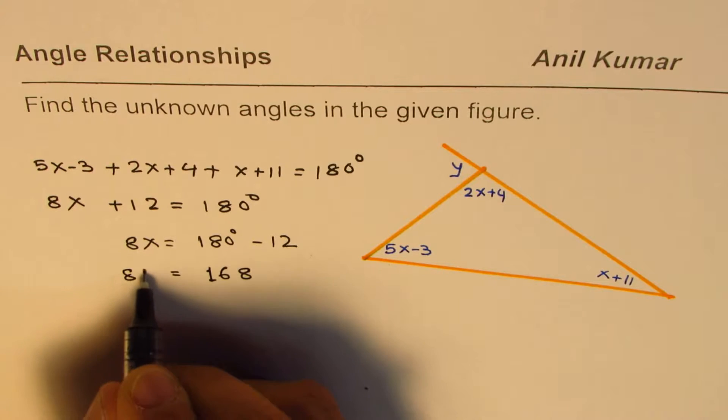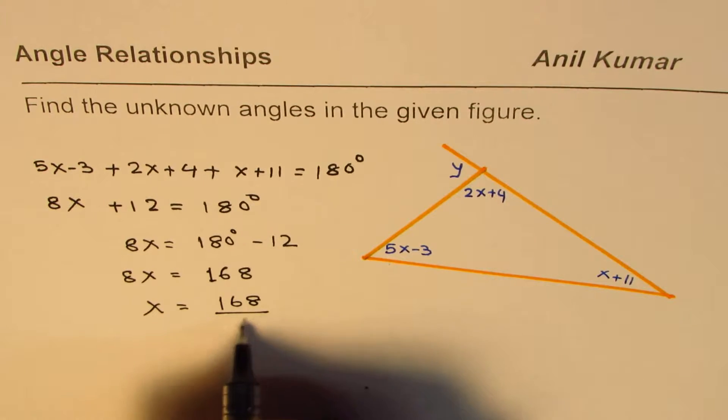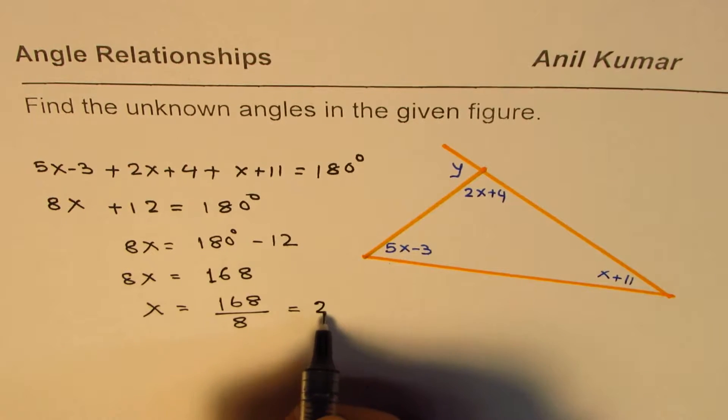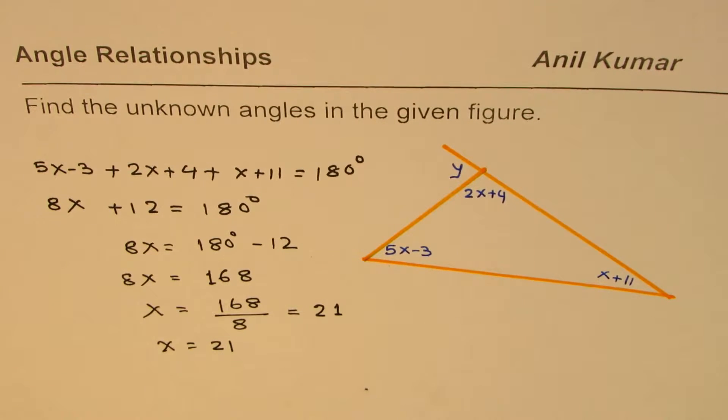168 is 8x. So x is 168 divided by 8, that gives you 8 goes 2 times 16 and 1, so 21. So x equals to 21 for us.